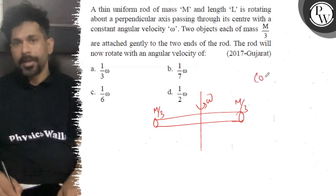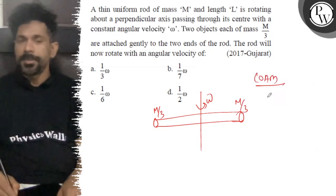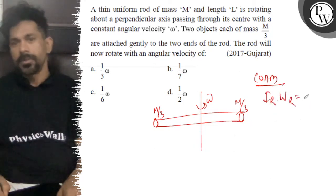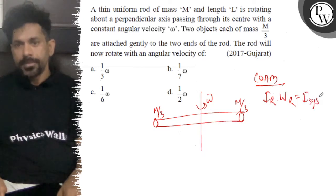So conservation of angular momentum. I of road into omega of road is equal to I of system, omega of system.